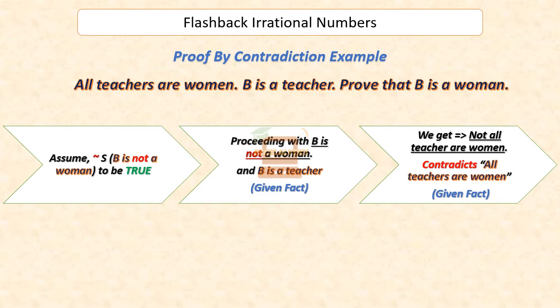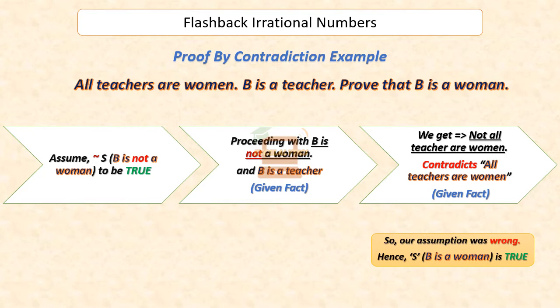This contradiction arose because we assumed that B is not a woman. Hence, we can conclude that our assumption was wrong. Thus, by proof of contradiction, we have proved that B is a woman.